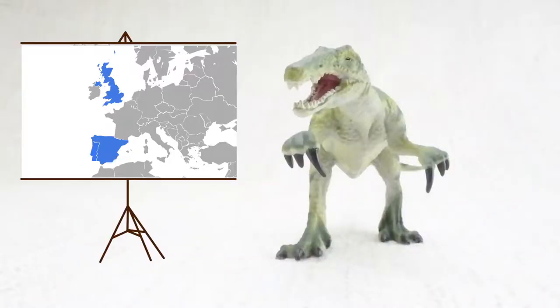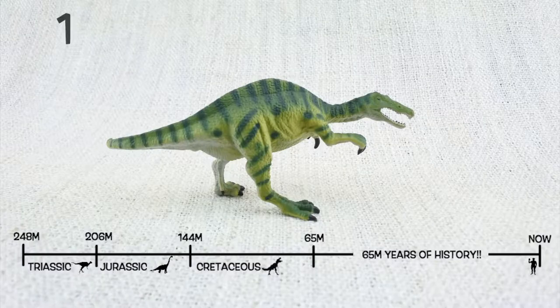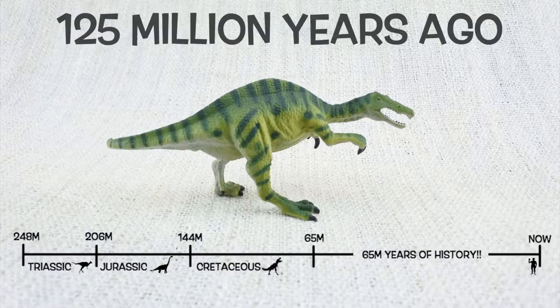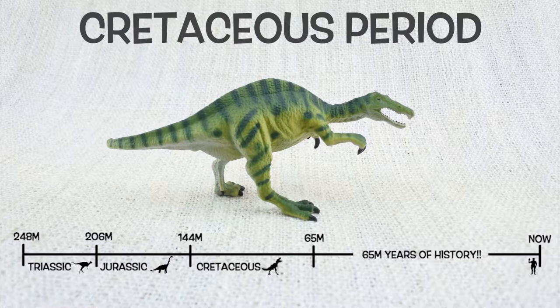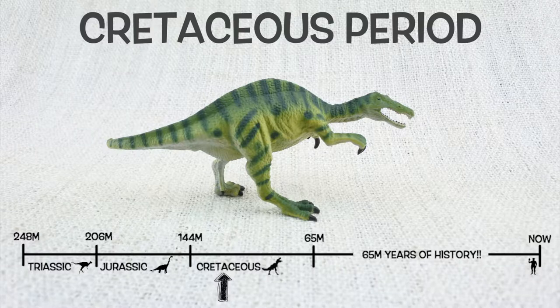Baryonyx was found in Europe. They lived about 125 million years ago in the early Cretaceous period with Iguanodon.